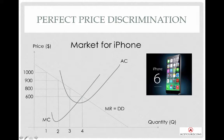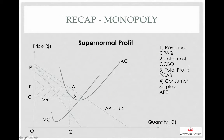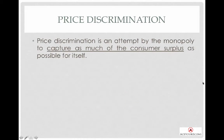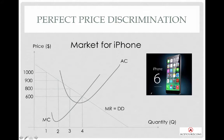Let's consider this scenario where you are selling iPhone 6 — Apple is the producer. We know that the demand curve is downward sloping, but now your marginal revenue is equal to your demand curve. Why is this so? Remember earlier on, when we have a single price monopoly, your marginal revenue is lower than your demand curve — we derived this in the previous lecture on monopoly. Please go back and watch that if you don't know why. But now we want to explain why marginal revenue equals the demand curve.